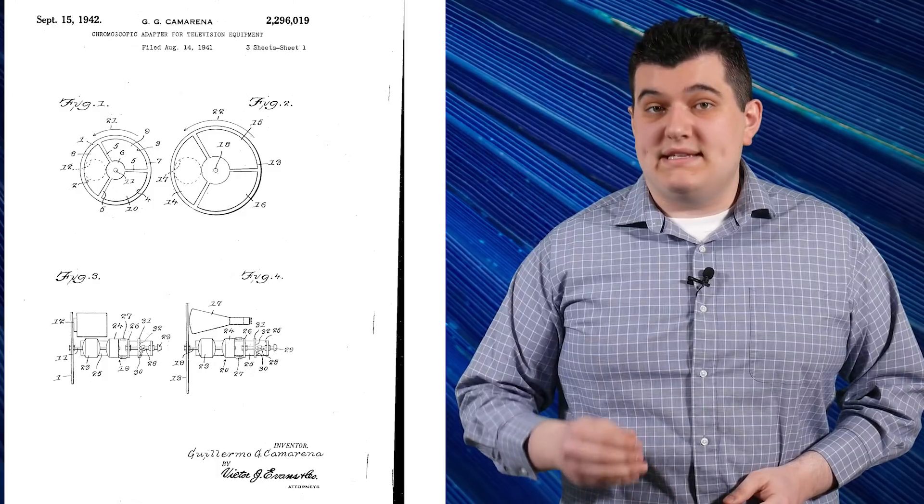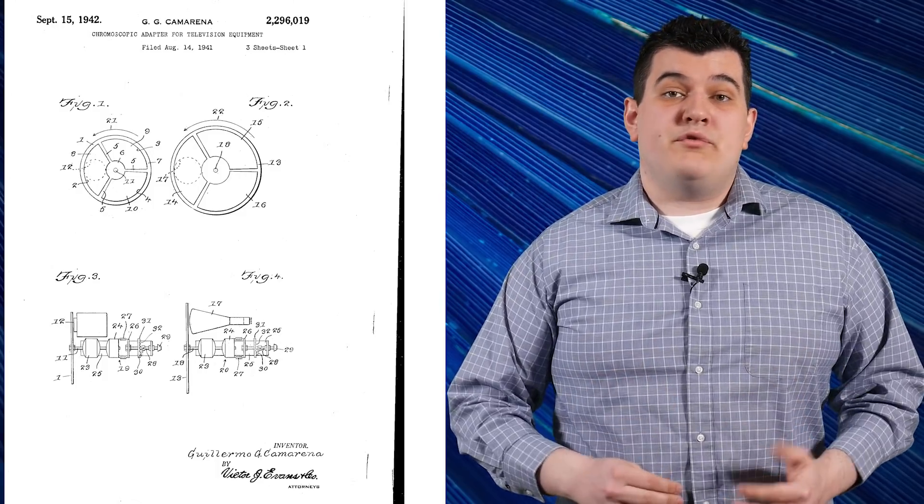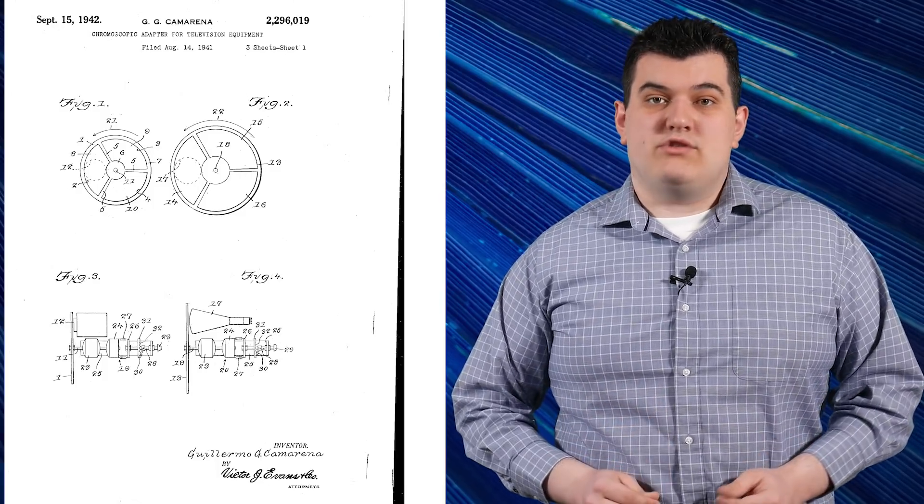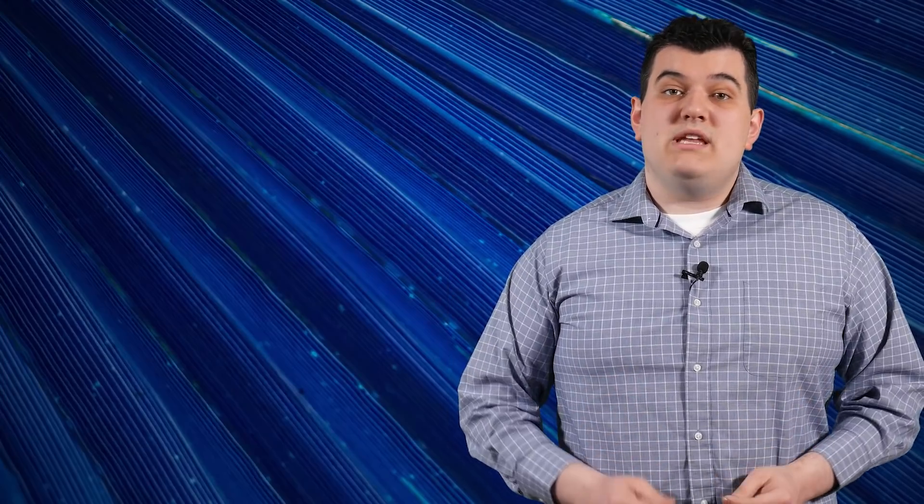Now let's talk a bit more about Guillermo González Camarena. Two videos ago, I briefly talked about him and his clever but ultimately inadequate color wheel adapter for black and white televisions. He's also known for inventing a CRT with two electron guns rather than three. This would supposedly make color televisions cheaper to produce. However, there are two glaring problems with attributing him to inventing that.